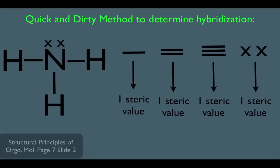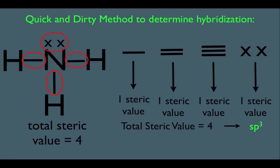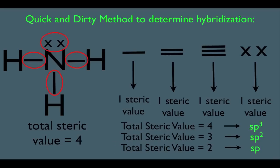The quick and dirty method involves you first determining the steric value of the nitrogen in ammonia. He has a single bond worth one steric value, another single bond worth one, another worth one, and the lone pair is worth one steric value. Adding these up gives you a total of four. If a central atom has a total steric number of four, it must be SP3 hybridized. A steric value of three means SP2, and two means SP hybridized. So this central nitrogen is therefore SP3 hybridized.